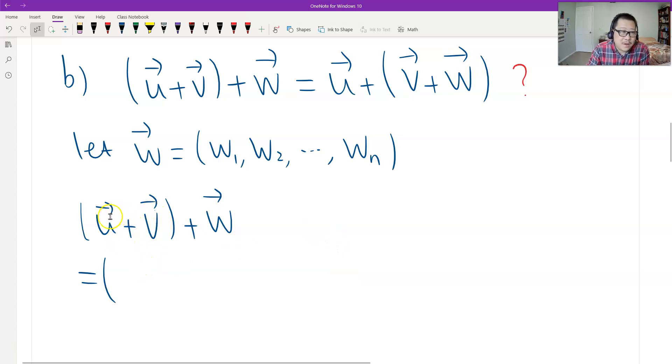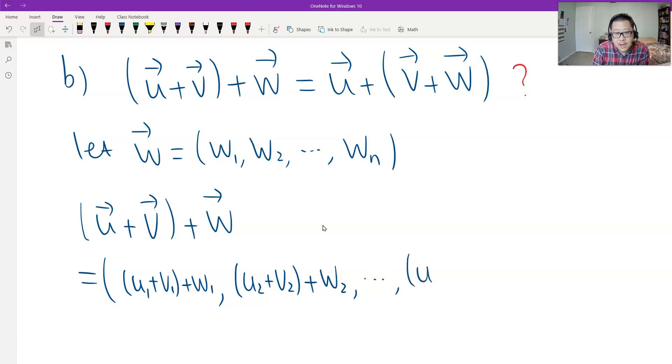However, each term should have this form. First associate u, v, and then plus w. So here is u1, the first term, plus v1, and then plus w1. This should be the first coordinate or the first component. And then the second, which is (u2 + v2) + w2, and then goes to the last.